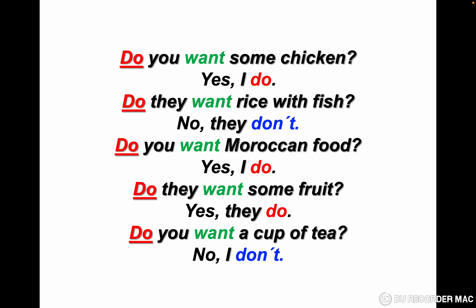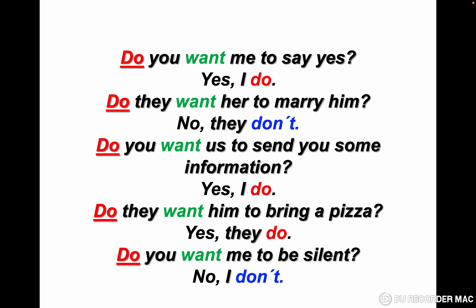Do they want Moroccan food? Yes, they do. Do you want a cup of tea? No, I don't. Let's repeat after me: do you want some chicken? Yes, I do. Do they want rice with fish? No, they don't. Do you want Moroccan food? Yes, I do. Do they want some fruit? Yes, they do. Do you want a cup of tea? No, I don't. Let's go to the next slide. Do you want me to say yes? Yes, I do. Do they want her to marry him? No, they don't. Do you want us to send you some information? Yes, I do. Do they want him to bring a pizza? This word is pronounced 'pizza'. Yes, they do. Do you want me to be silent? No, I don't.